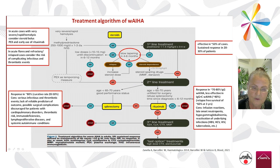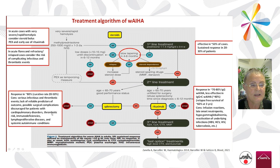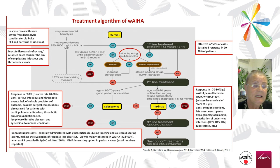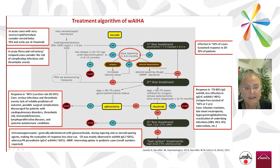Splenectomy is still a good option with responses in about 80%, but concerns include serious infections and thrombotic events, as well as surgical complications. It is clearly discouraged for patients with cardiopulmonary disorders, thrombotic risk, immunodeficiency, lymphoproliferative or immune conditions, or age greater than 65–70 years. Immunosuppressors are generally administered as steroid-sparing agents but are now moving to third line, as responses are mainly partial.